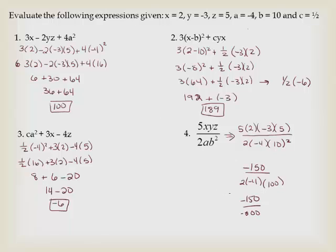Now I'll have negative 150 over negative 800, because 2 times 4 is 8 times 100 is negative 800. And 150 and 800 will both divide by 50, which will give me 3 over 16. And that's positive because a negative over negative is a positive.